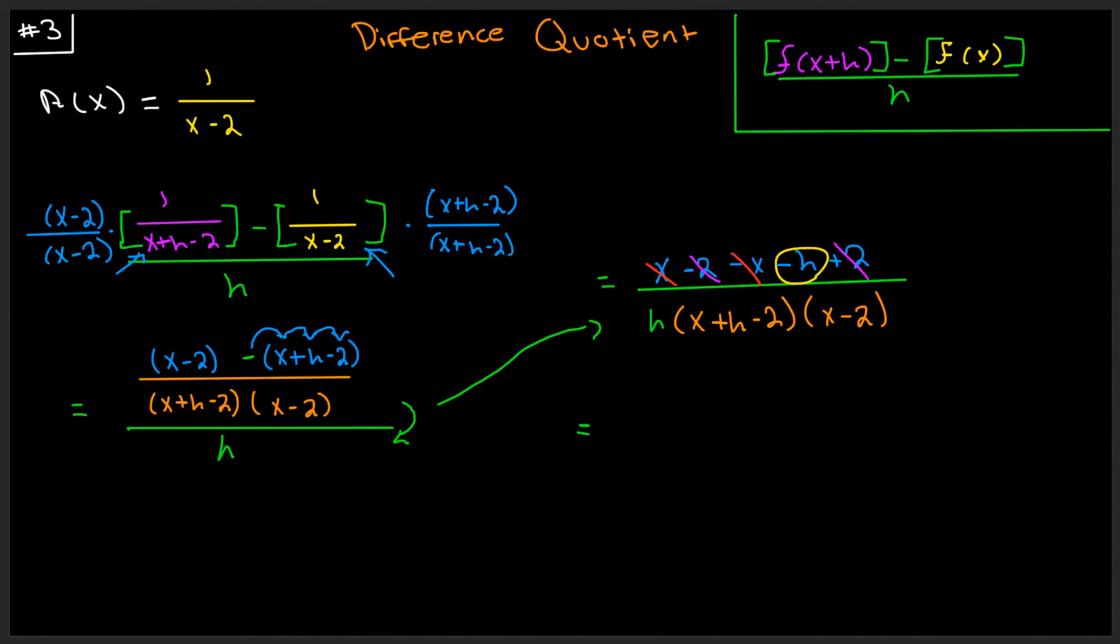So let's continue on. And don't forget that this negative h will cancel out with this positive h. And what you'll be left with is positive one. Or sorry, negative one, because it's a negative h divided by an h. Negative one over x plus h minus two times x minus two. And so again, you could foil all this out and distribute these polynomials against each other.